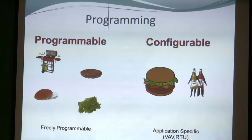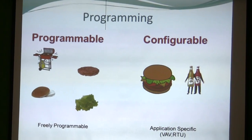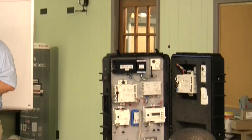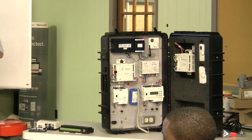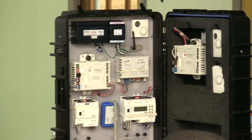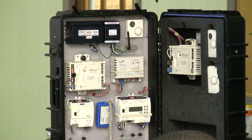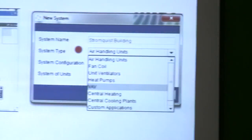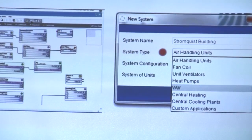The PCG — this controller right here from Johnson Controls — is actually both programmable and configurable. When you go into the tool PCT to program it, it's going to ask you a series of questions about your system.